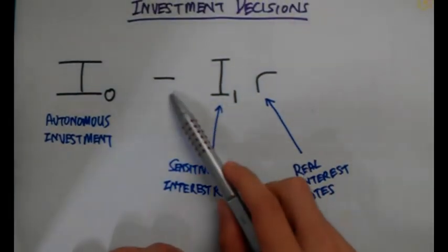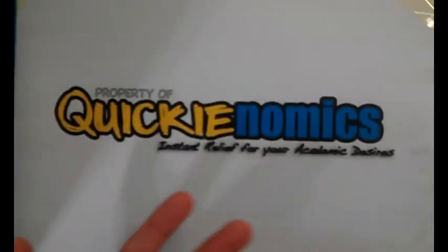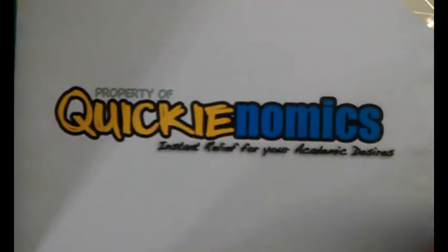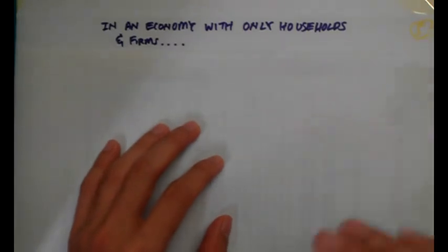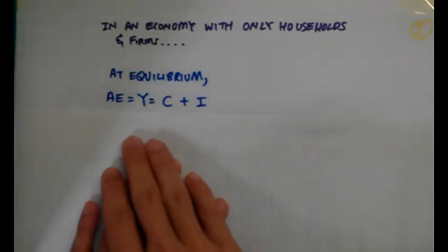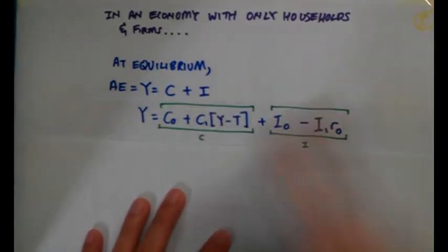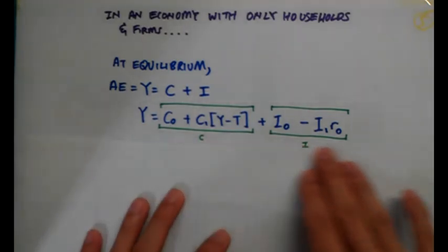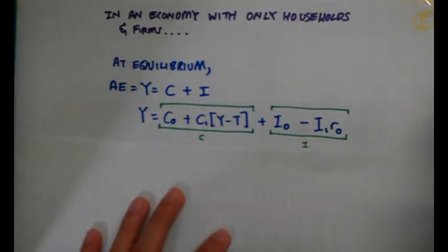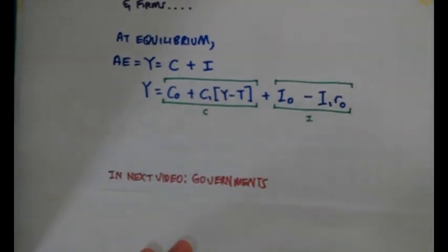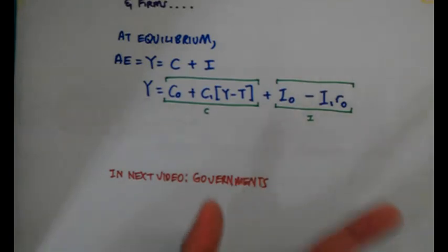Going back to the equation, I hope you now understand why the minus sign is there. Investment is quite straightforward. Now I'm going to combine consumption and investment. Assuming we live in an economy with only households and firms — no government — at equilibrium, aggregate expenditure equals income, which equals consumption plus investment spending. Expanding into proper components, we get the full AE equation.